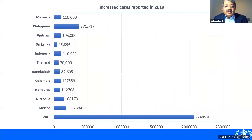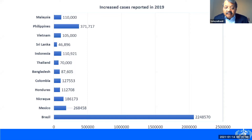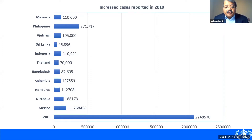Many countries in 2019 recorded their highest number of dengue cases. We have just finished tallying the 2019 cases, and for the first time it has crossed the 5 million mark with over 5,000 deaths. These are a few of the top countries, but dengue affects 129 countries all over the world.